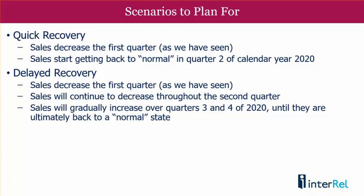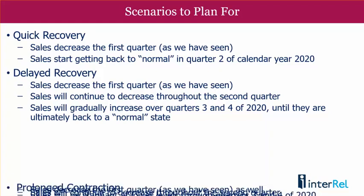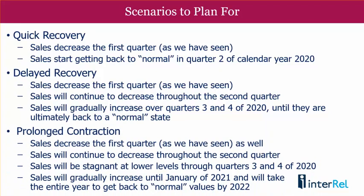Last, my sort of worst-case scenario would be prolonged contraction, in which, like the delayed recovery scenario, sales will continue to decrease throughout quarter two, but instead of recovering in the second half of 2020, the numbers will remain stagnant, and we don't see a true increase in sales until January 2021. It then takes the entire year to get back to our typical sales numbers at the start of 2022.